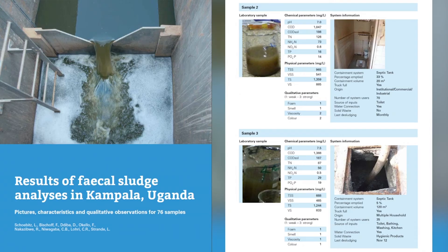Because there is still a general lack of information on fecal sludge characteristics, we compiled a report of 76 samples analyzed in Kampala, Uganda. The samples are presented in increasing concentrations of COD. For each sample, there is a picture of where the sample was taken and what it looked like in the laboratory, along with characterization information on solids, nutrients, and organics, as well as qualitative information like how viscous it appeared and information on the type and usage of on-site containment.